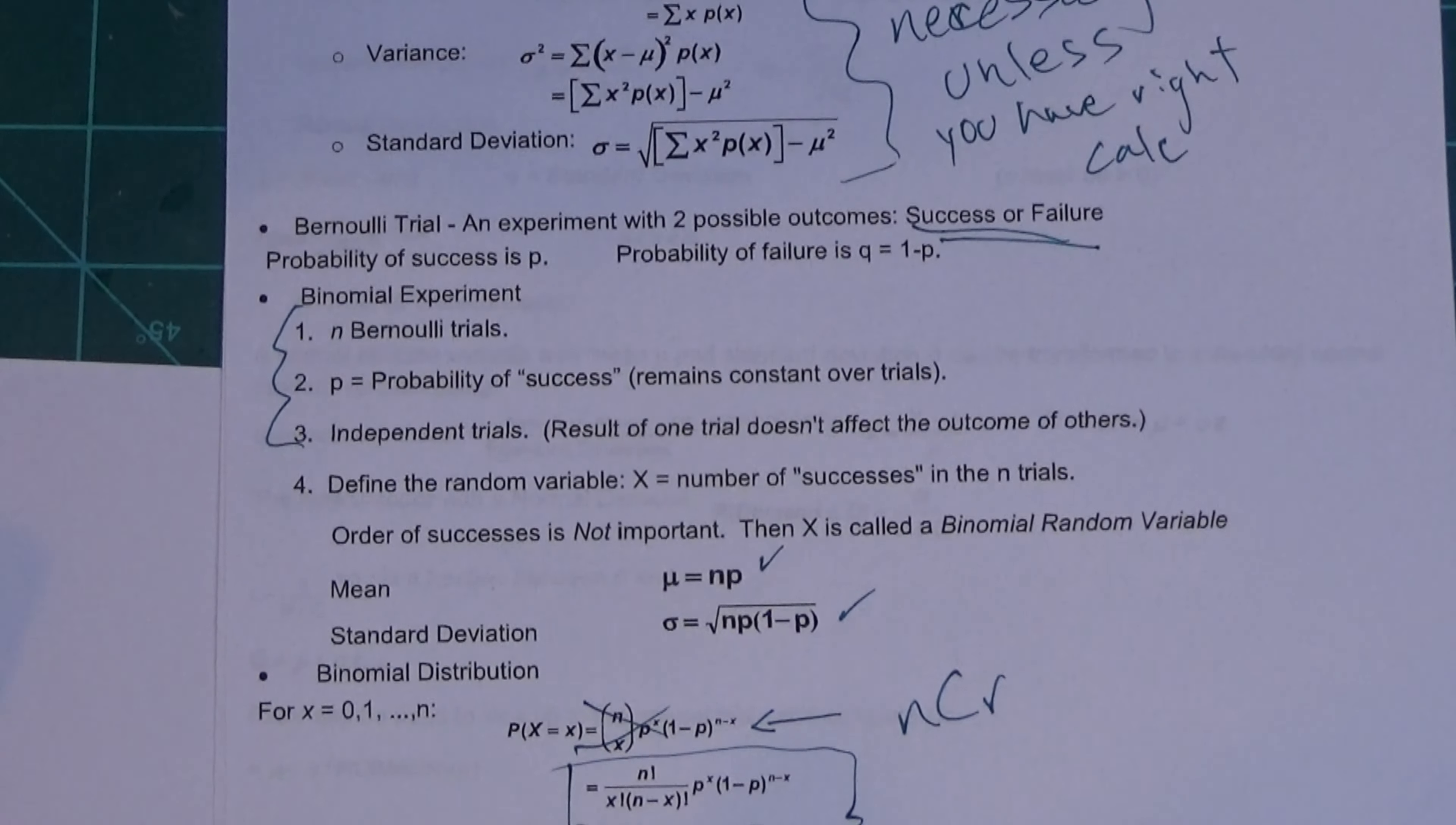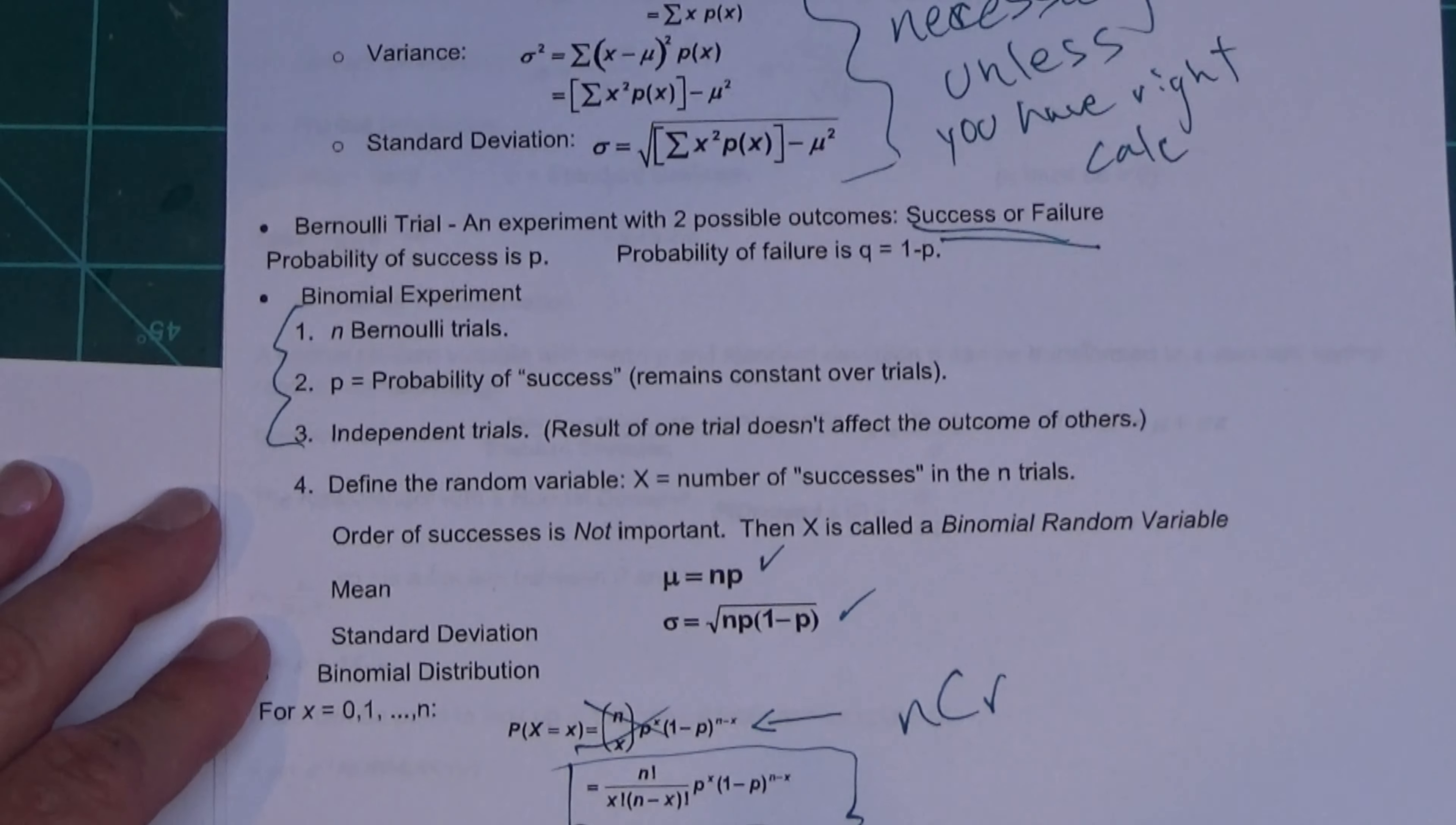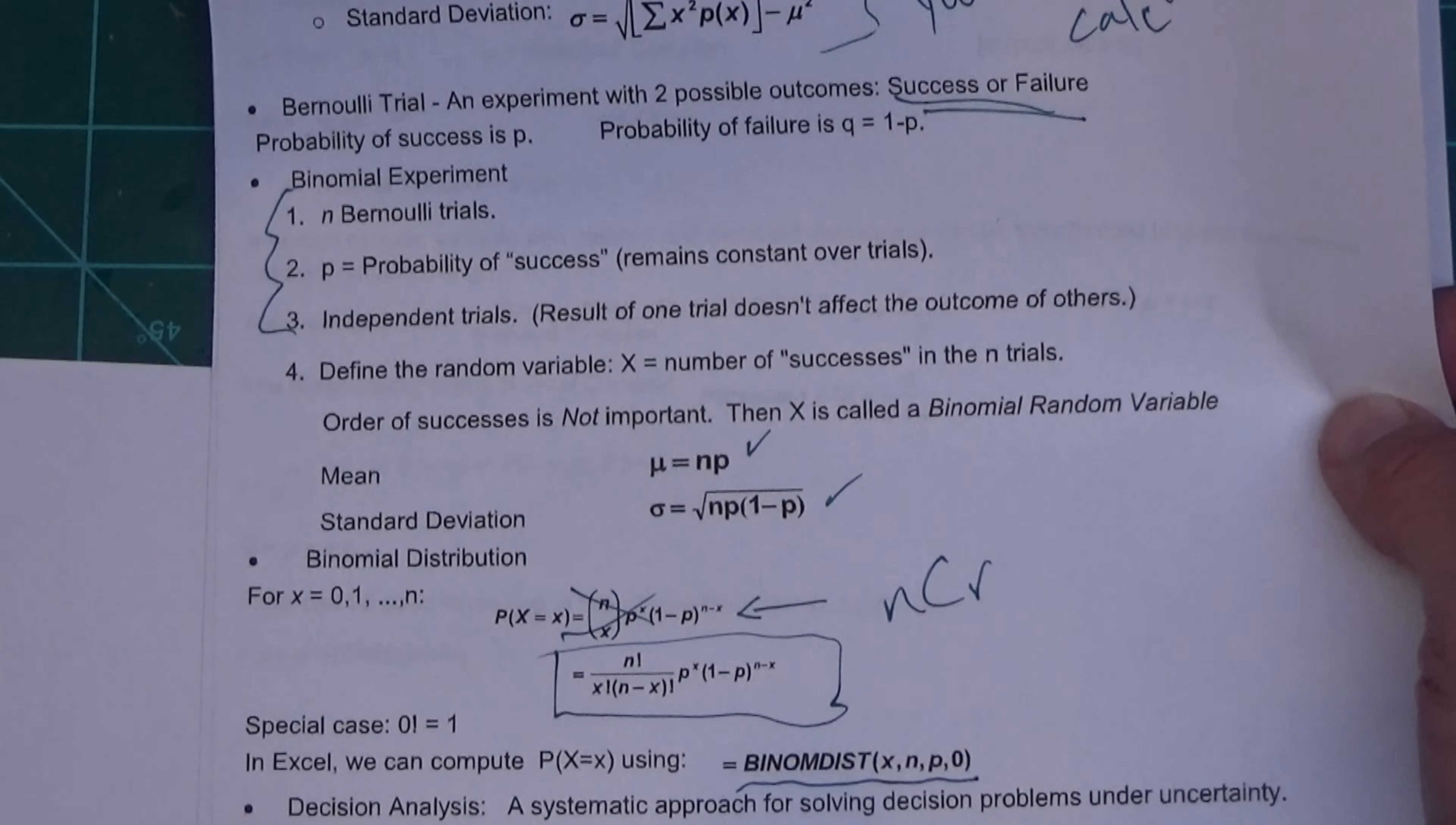And here she has the Excel command—Excel command, that was a hint. Then she starts talking about decision analysis right below it. She talks about the news vendor problem.